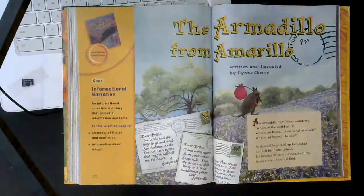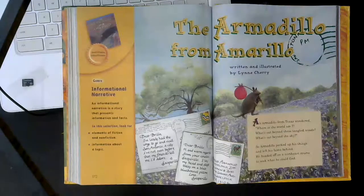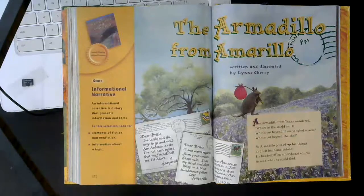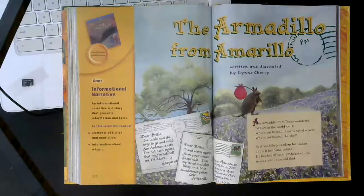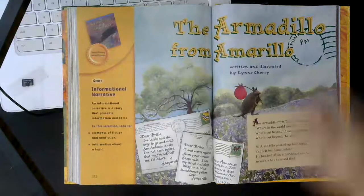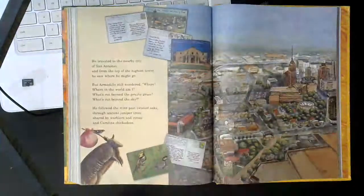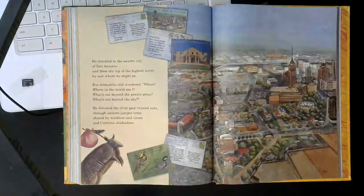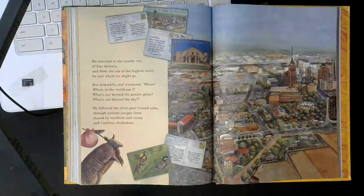An armadillo from Texas wondered, where in the world am I? What's out beyond these tangled woods? What's out beyond the sky? So Armadillo packed up his things and left his home behind. He headed off on a northeast course to seek what he could find. He traveled to the nearby city of San Antonio and from the top of the highest tower he saw where he might go.